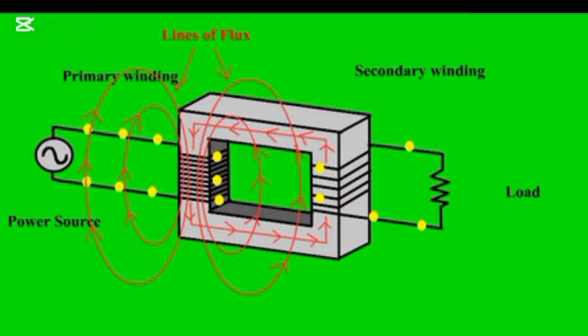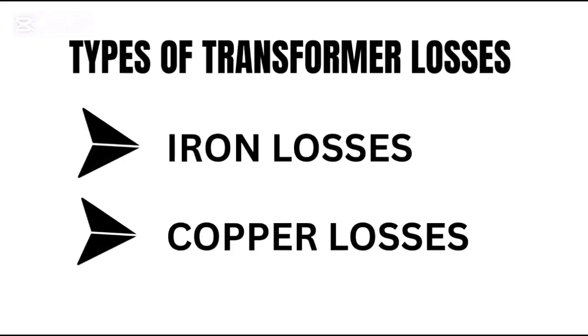Even though transformers are efficient, often up to 99%, some energy is still lost. Losses come in two forms.